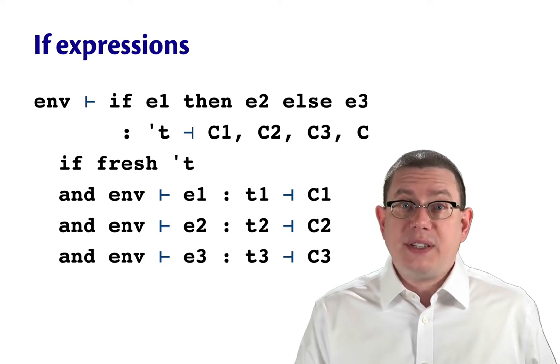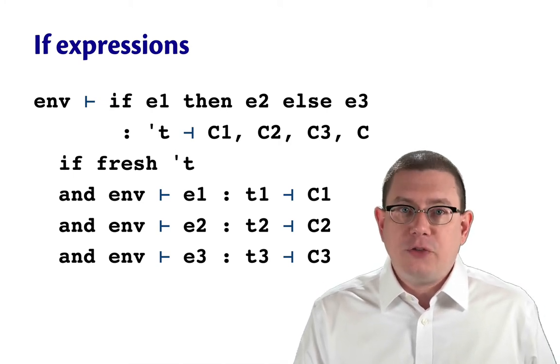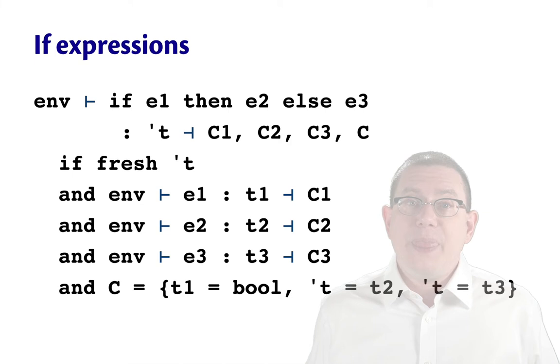Now, to pull all this together, we know that there are some relationships that must hold between the types that have shown up here. And that's what we record in this additional set of constraints, c. So set c will be t1 equals bool. Because we know that we need to constrain the type of the guard to be Boolean. Furthermore, tau needs to equal both t2 and independently t3. Because the types of both the then and else branches must be the same in an if expression.